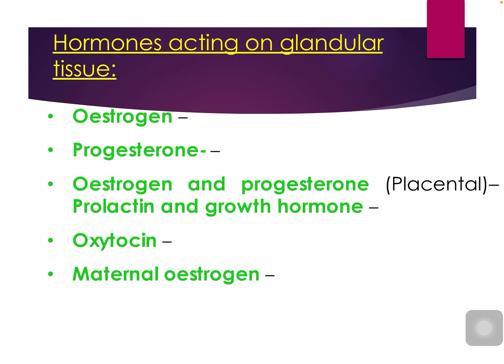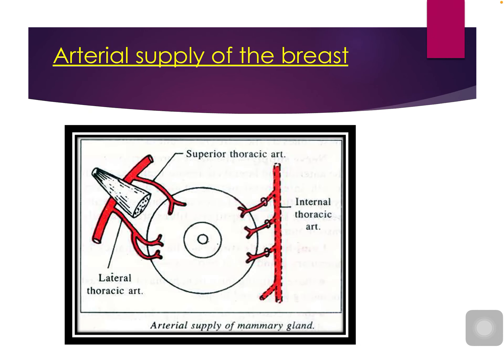The hormones acting on the mammary gland include estrogen and progesterone during the normal menstrual cycle and also during pregnancy. Placental hormones and oxytocin stimulate milk ejection. You will learn more about this in the physiology of secretion of the mammary gland.